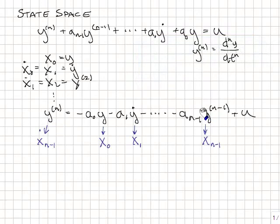So I'm just going to replace the values of y with the state variables x. y is equal to x0, y dot is equal to x1, and in the front we have yn is equal to xn minus 1 dot.